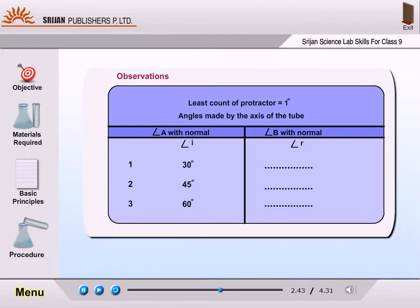Observations. Least count of protractor is equal to 1 degree. Angles made by the axis of the tube: A with normal, B with normal. Angle i, angle r: 30 degrees, 45 degrees, 60 degrees.